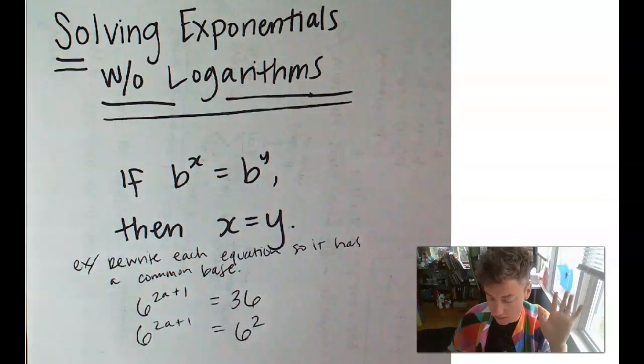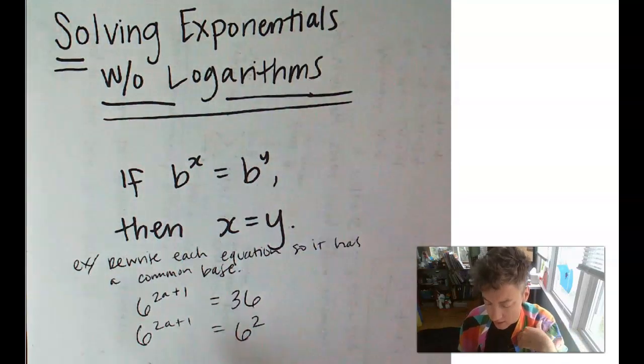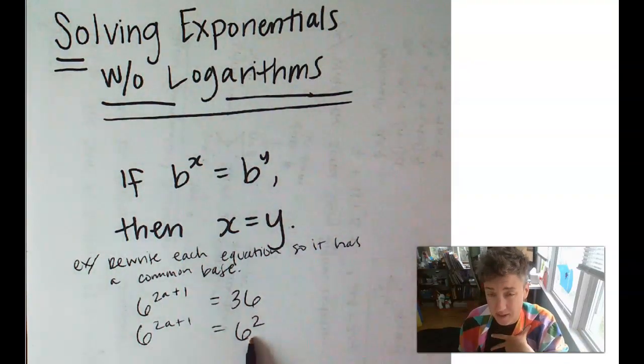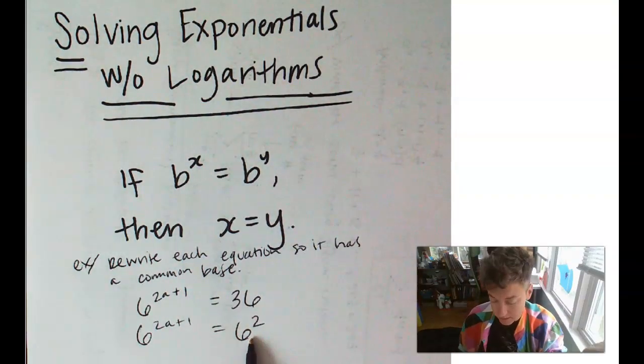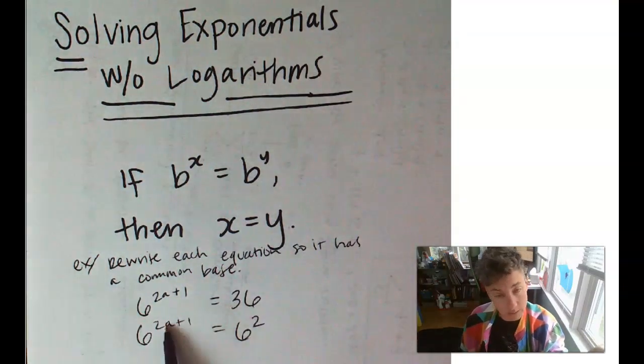Now, we're not going to do it in this example, because all I ask you to do is rewrite the equation so it has a common base. But, eventually, the next step would be to set the exponents equal to each other and solve for the variable. Cool.